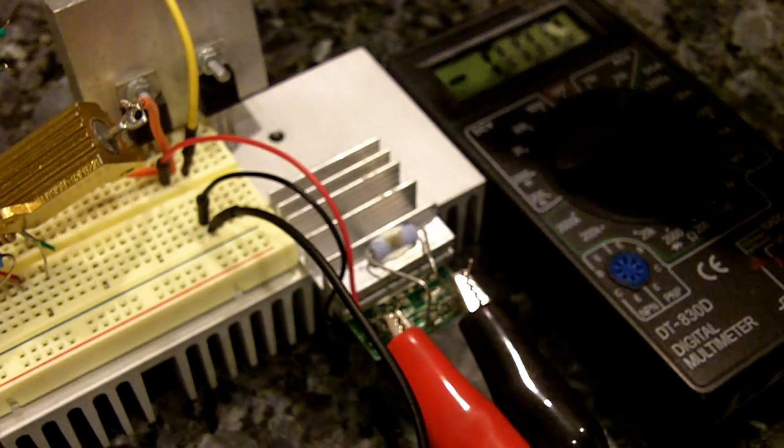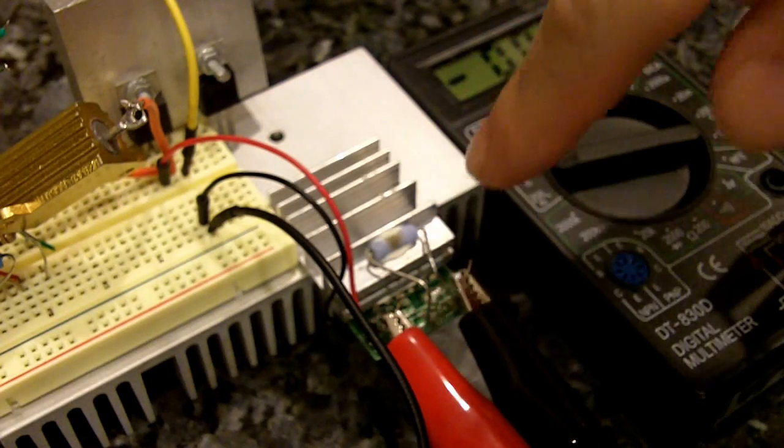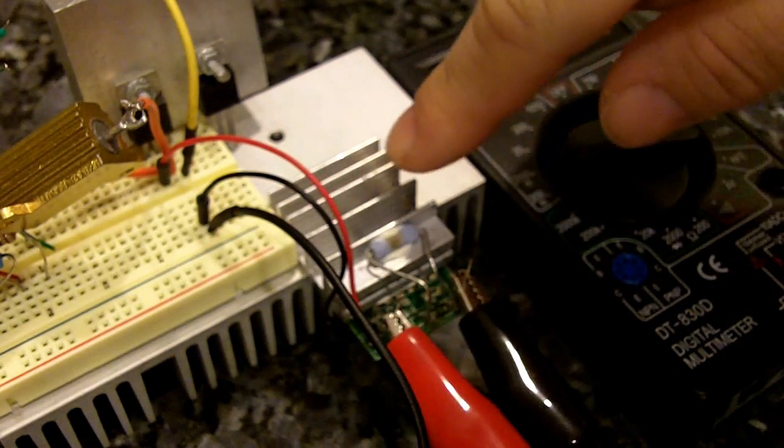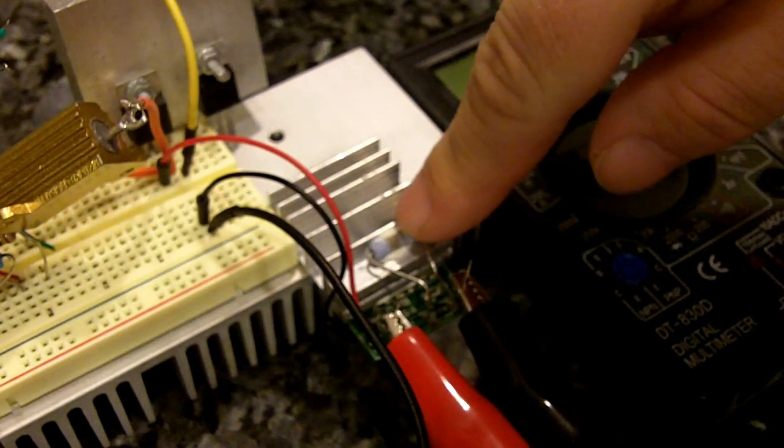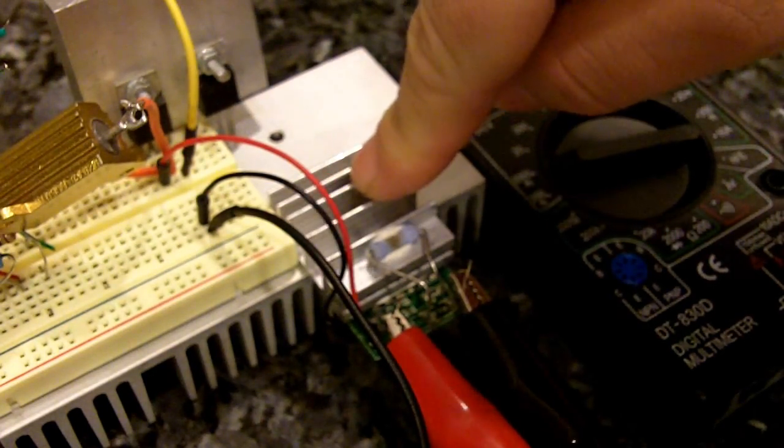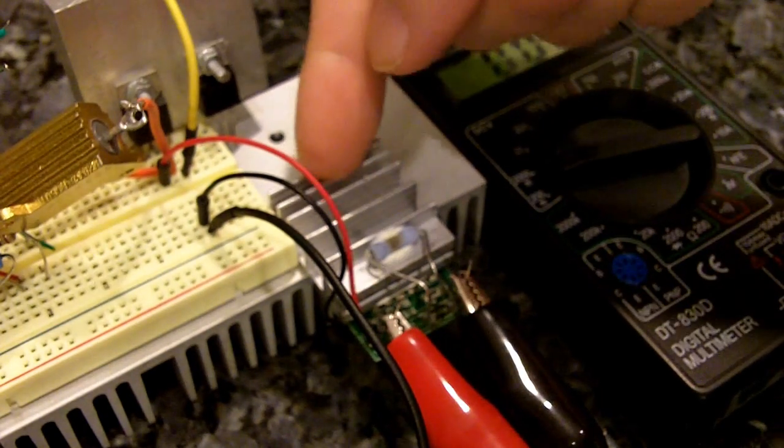So what I did was I just heat-sinked the dummy load underneath, and I took the 1 ohm resistor and I also heat-sinked that with thermal adhesive to the heat-sink, and then I just added a bigger heat-sink.